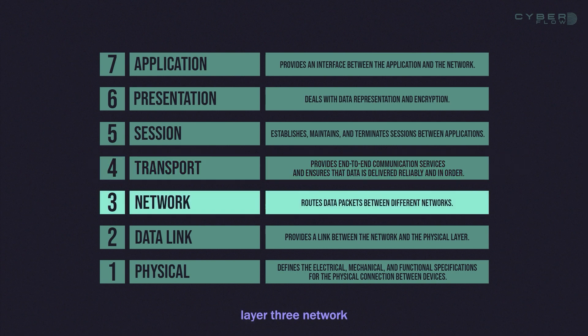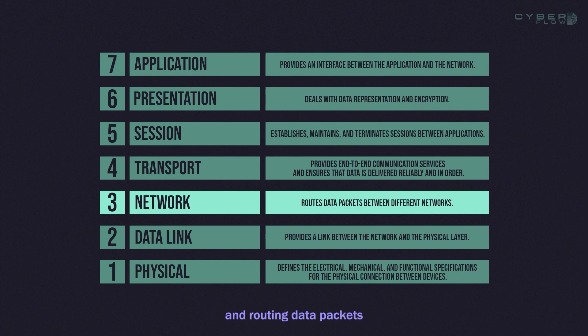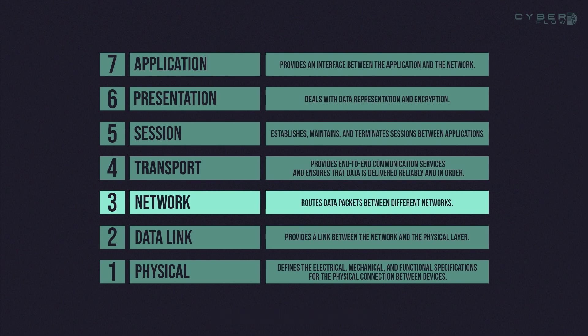Layer 3, Network, routes data packets between different networks. It is responsible for addressing and routing data packets through the network. The main protocol associated with this layer is IP.